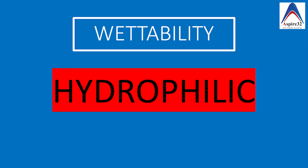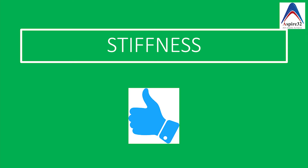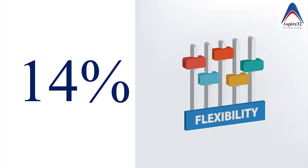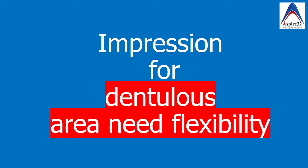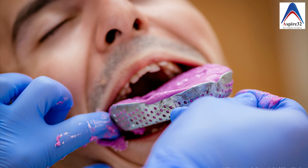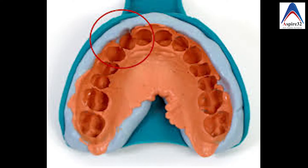The next important property is flexibility. Alginate has one of the highest flexibility — 14%. The use of this flexibility is that suppose you are taking an impression which has a lot of undercuts; once the impression sets, it is easier to remove the impression from the undercut area without breaking it.